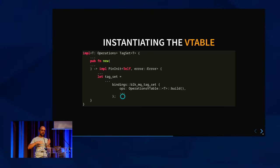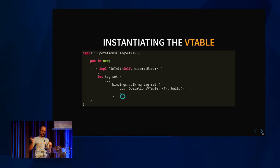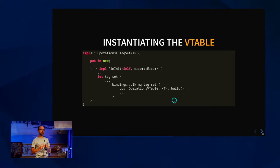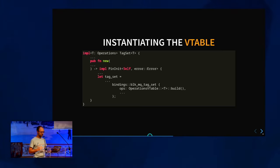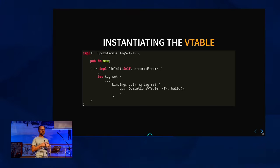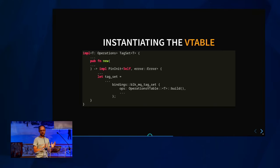Now we can build our vtable, but we also have to give it to the kernel — we do that in the tag set. When you instantiate a block device, you put a pointer to the vtable in the tag set struct. We do this by calling `OperationsVtable::build`, which returns a static reference to the constant we saw before, and then everything works. All this complexity is hidden from the driver implementer — it exists only in the kernel library code. Yes, it's complex, but we shield the user from it.